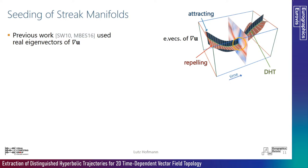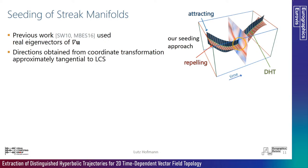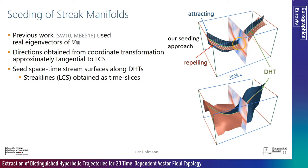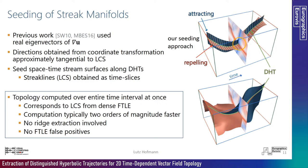Having obtained the hyperbolic trajectories, we seed streak manifolds at an offset along them. Previous work used directions of real eigenvectors of the instantaneous Jacobian, which are not well aligned with LCS in general. From the coordinate transformation used in refinement, we obtained directions approximately tangential to the LCS and used these for offsets. We compute stream surfaces in the spacetime domain and obtain streak lines as time slices — computing the time-dependent topology over the entire time interval in one step, corresponding to LCS extraction from a densely computed FTLE. Our computation is typically two orders of magnitude faster than the direct approach, with no ridge extraction, and no false positive FTLE-ridge intersections.